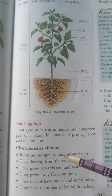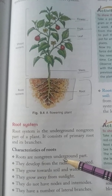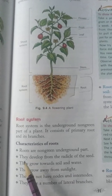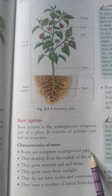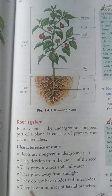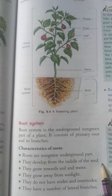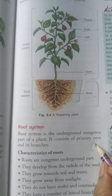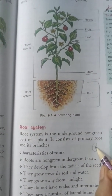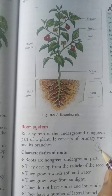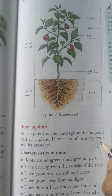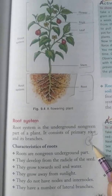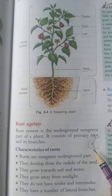Before going further, we need to discuss the characteristics of roots. Roots are non-green underground parts. They develop from the radicle of the seed. As we studied in our previous junior classes, the seed develops into two main parts: this part is called the plumule, and this part is called the radicle.